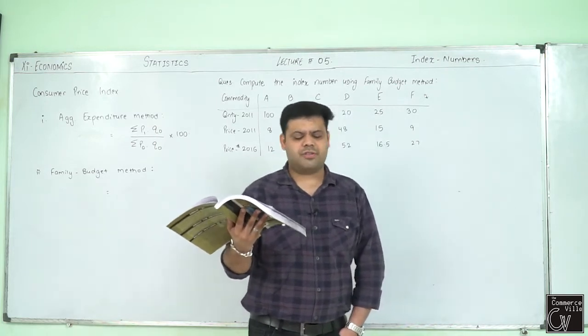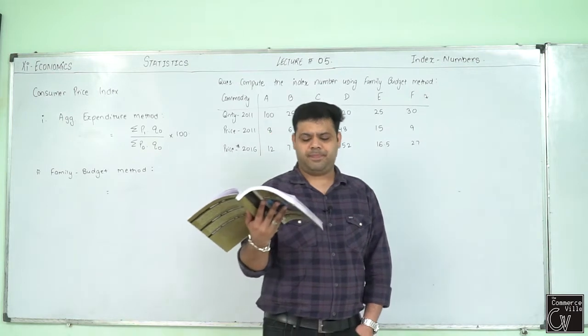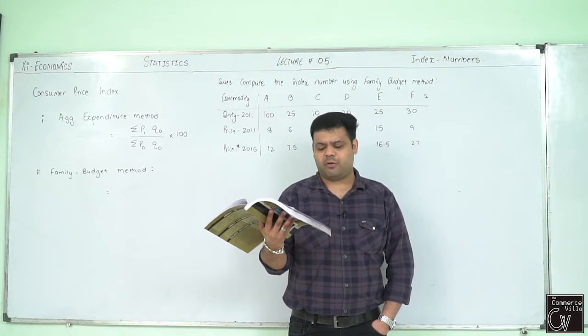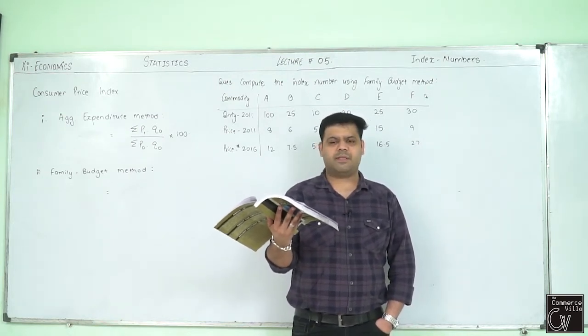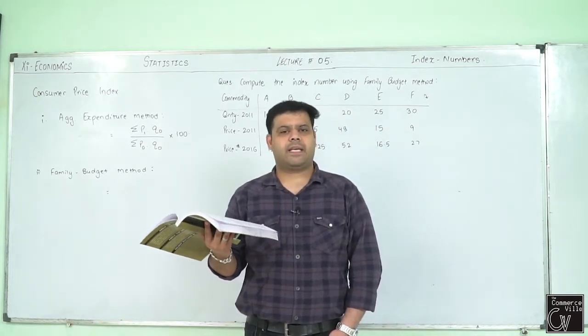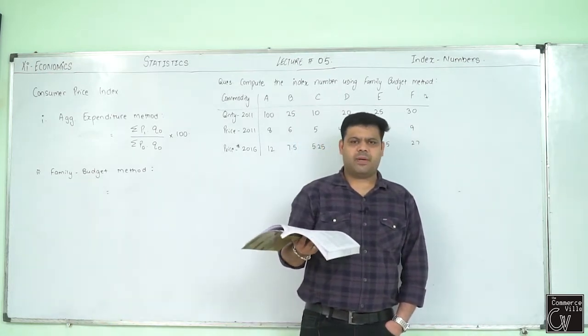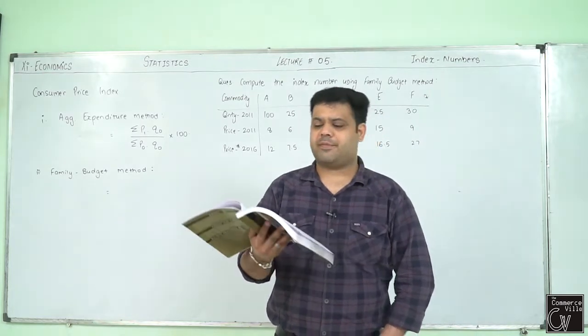Methods for construction of consumer price index. The first is aggregate expenditure method. This method is same as Laspeyres method for constructing the weighted index. The following formula is applied: Sigma P1Q0 by Sigma P0Q0 into 100. We will write CPI instead of P01. That is consumer price index or cost of living index. Now let's go to today's topic, family budget method.